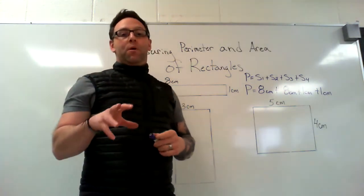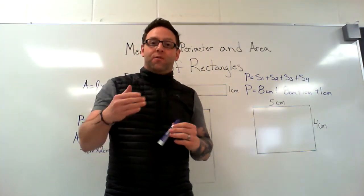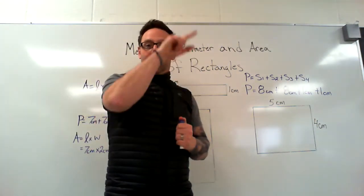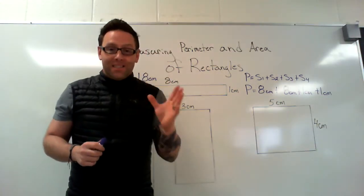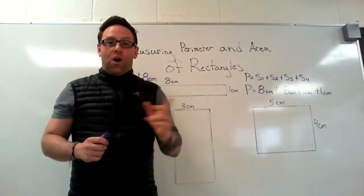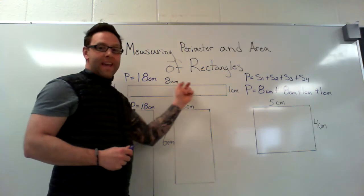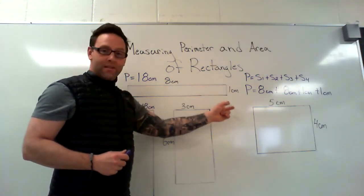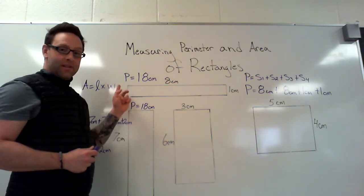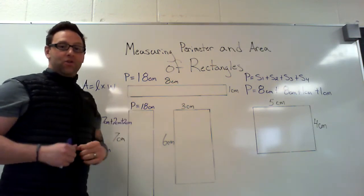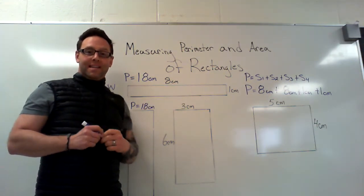So the perimeter of this rectangle is 18 centimeters. A good way to think about perimeter is to think about walking around the outside of a shape — the perimeter is the distance you would walk around the outside. I walk eight centimeters, plus one is nine, plus eight is 17, plus one is 18. You can see that I've walked the outside of this shape and the perimeter is 18.